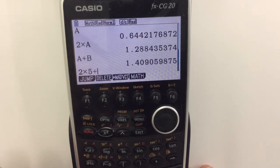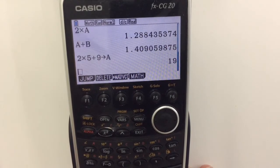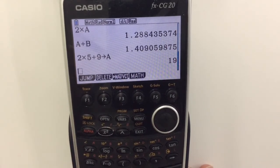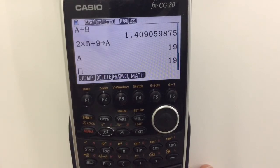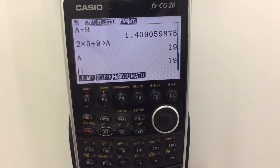and there you go, A is now 19. So we can do whatever we want with that value now. So you simply just write over any previous calculation that you may have done. There you go.